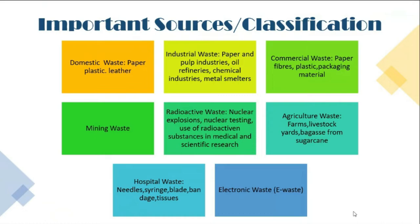E-waste contains lead, mercury, arsenic, cadmium, polyvinyl chloride, and other toxic and hazardous substances, which pose serious problems for the environment and human health. E-waste can come from any source — individual households, government, public or private sector, computer retailers, computer manufacturers, or the secondary market for old computers. These represent the various kinds of sources and classification of solid wastes.